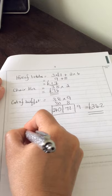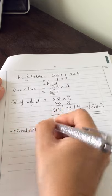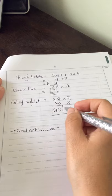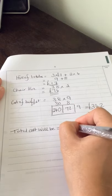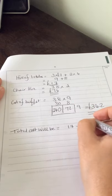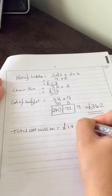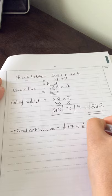So the total cost will be the hire of the tables, which is seventeen pounds, plus the hire of the chairs, which is seventy-six pounds, and the cost of the buffet, which is three hundred and forty-two.